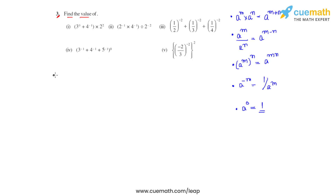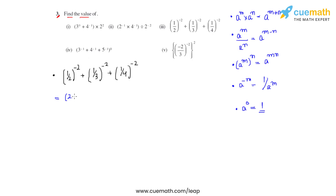The third bit says 1 over 2 whole raised to negative 2, plus 1 over 3 whole raised to negative 2, plus 1 over 4 whole raised to negative 2. Since we have fractions raised to negative powers, we flip the fractions to make the powers positive, giving us 2 squared plus 3 squared plus 4 squared, which is 4 plus 9 plus 16, equalling 29.